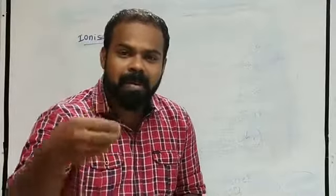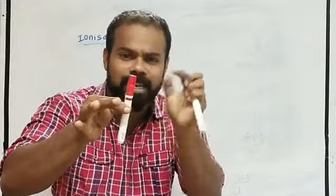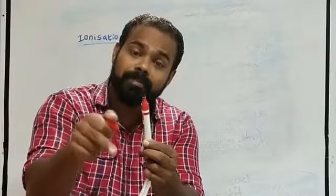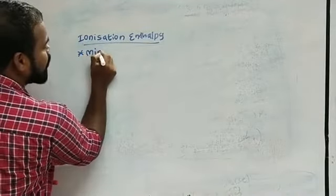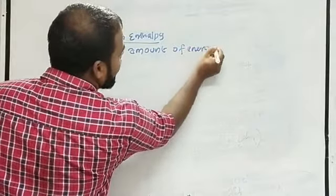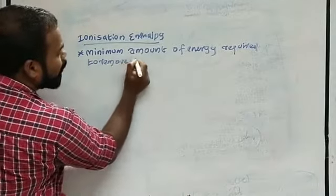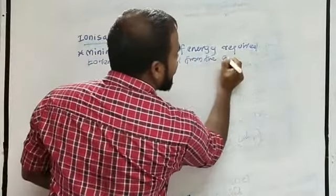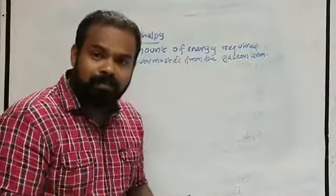You can assume this is an atom and this is the outermost electron — just one electron. The minimum amount of energy required to remove this electron from the outermost shell of a gaseous atom is the ionization enthalpy.